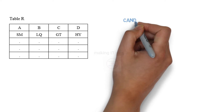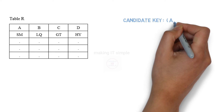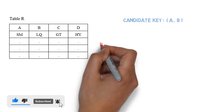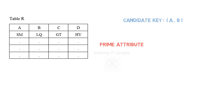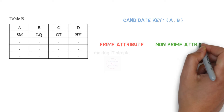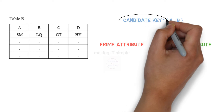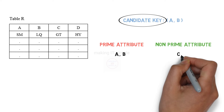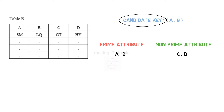Now, since A and B is the candidate key, we can differentiate the attributes into two types: prime attributes and non-prime attributes. Attributes that are part of the candidate key are called prime attributes — in this example, attribute A and attribute B are both prime attributes. Attributes C and D, which are not part of the candidate key, are non-prime attributes.